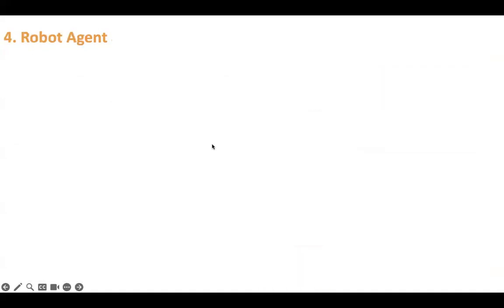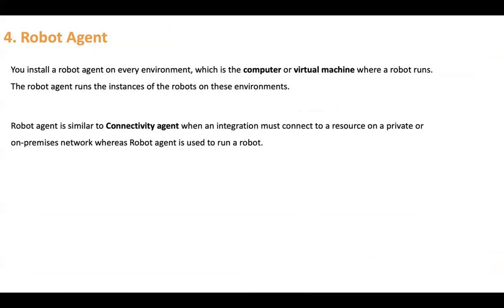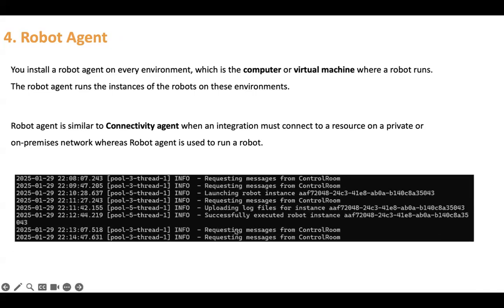Next is robot agent. You install the robot agent on every environment, which is a computer or virtual machine — you can install this agent on your local machine as well. The robot agent runs the instances of the robots on these environments. The robot agent is very similar to a connectivity agent used when an integration must connect to a resource on a private or on-premises network, whereas the robot agent is used to run a robot. Here we can see a screen of the robot agent waiting for the robot to run.